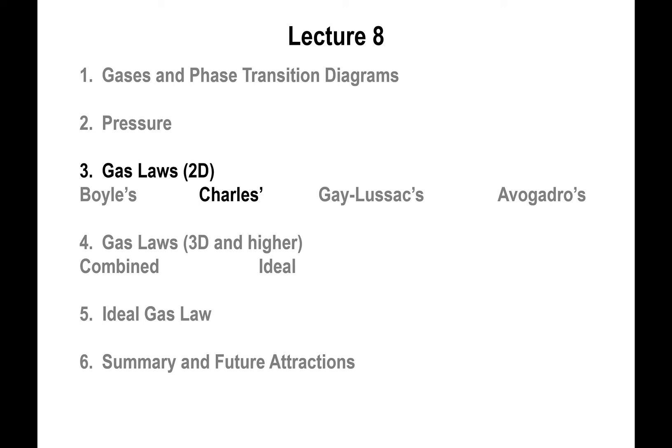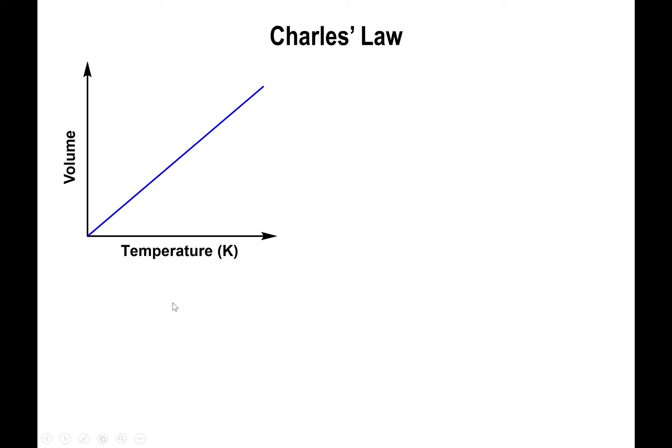Now onto Charles's Law. The premise is very similar, except now we look at volume versus temperature. If you plot data of volume and temperature, you end up getting a linear relationship right away. The y is volume and the x is temperature. The slope is still c, and we still assume the intercept is zero. If we solve for the slope, we find that V over T equals c.